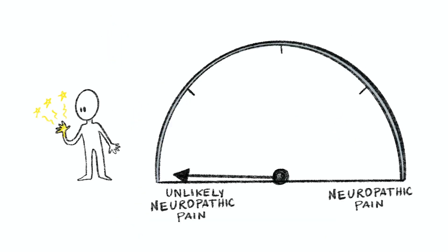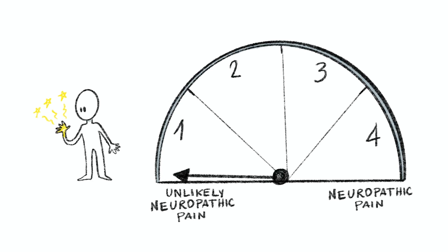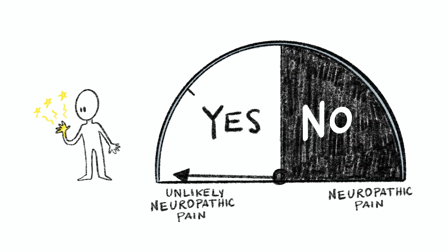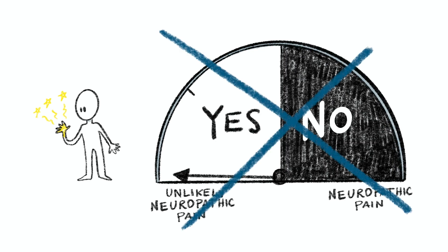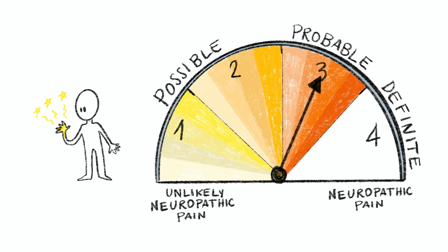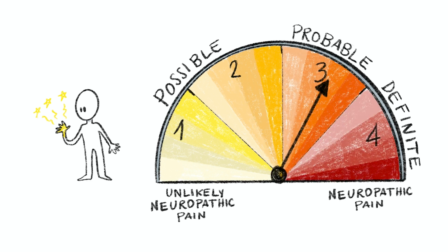The grading system includes a set of four criteria which will help us to determine the presence of possible, probable, or definite neuropathic pain. This already shows you that this decision is not black or white — the more criteria are fulfilled, the more likely the person has neuropathic pain.